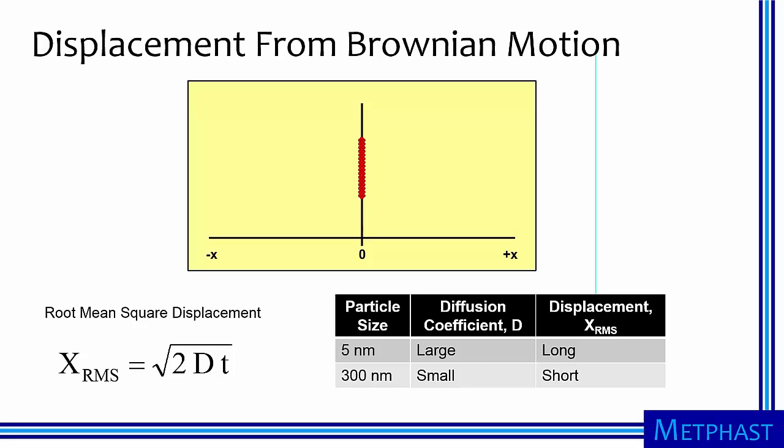Brownian motion causes particles to be displaced. Consider, for example, if we line up a bunch of particles at time zero and then allow them to randomly jitter. After some time, these particles become displaced away from the center, randomly moving in any direction. The net displacement can be expressed as the root-mean-square displacement, which is simply the square root of two times the diffusion coefficient times time.